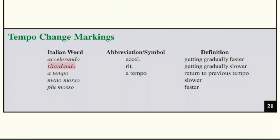Retardando means to get gradually slower, and the abbreviation is RIT. A-tempo informs us to return to the previous tempo, and the abbreviation or symbol is the same: A-tempo.